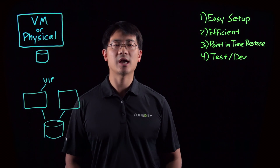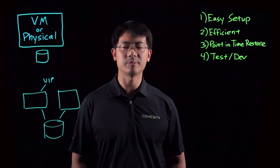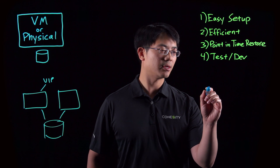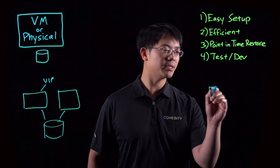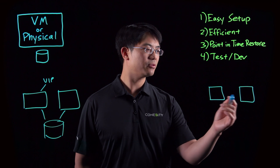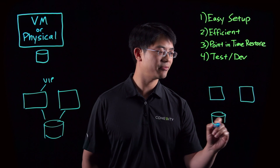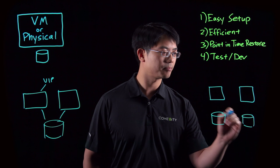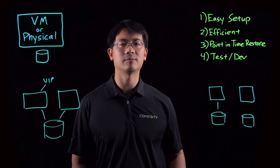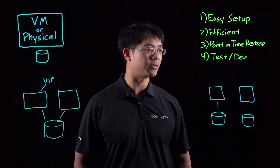Now, another high-availability solution that SQL provides are always-on availability groups. In this case, you have replication not only at the server level, but also at the data level. So for example, here we have two servers, each with a replica of the database. And at any given point, one of these servers will be the primary, and the others will be secondaries that can serve data as well.